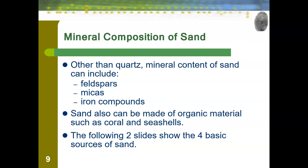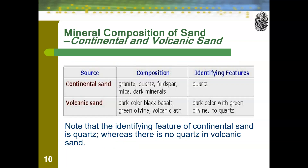There are actually different types of sand. First, we have continental sand, which is made of granite, quartz, feldspar, mica, and dark minerals. Its identifying feature is quartz — this is what we have here in Georgia. Continental sand can still vary in different quantities of different components across different areas; the sand across the entire state of Georgia is not the same everywhere.